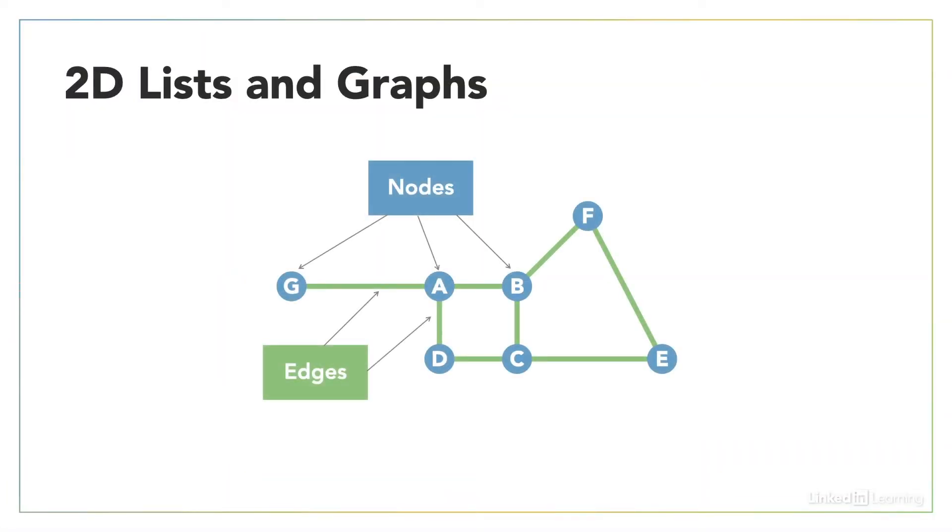Many of the algorithms associated with pathfinding work with graphs. By graphs, I mean the sort associated with graph theory and mathematics, rather than in the sense of graphs and charts that you may be more familiar with. We will see in this video that a maze stored in a 2D list can represent a special type of graph, where each cell in the list corresponds to a node, and adjacent cells are connected by edges.